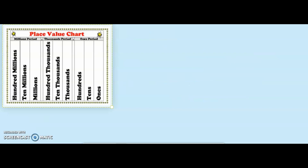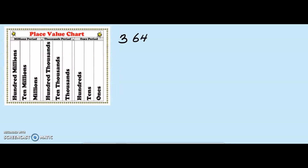Let us look at reading numerals. All numbers in our number system are separated into groups of 3 digits, starting from the right, using a comma. Let us take for example our number 3,645,213. We start to circle our groups from the right. Each group has 3 digits. This 3 is going to fall into its own group because it is the only digit remaining after we finish circling from the right.